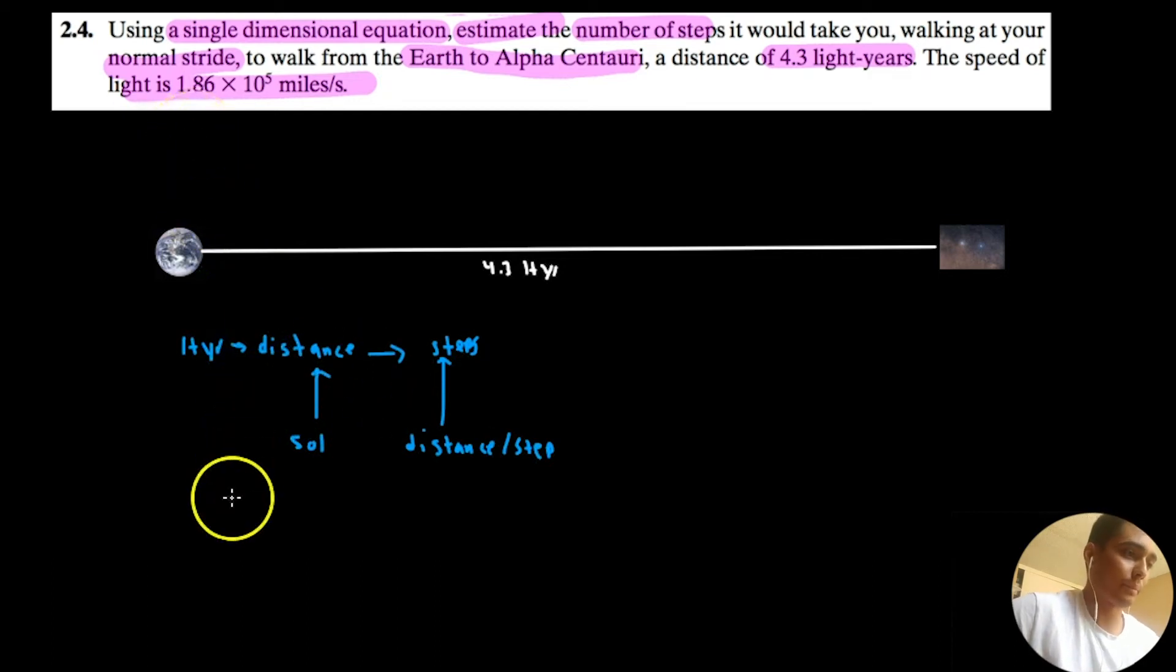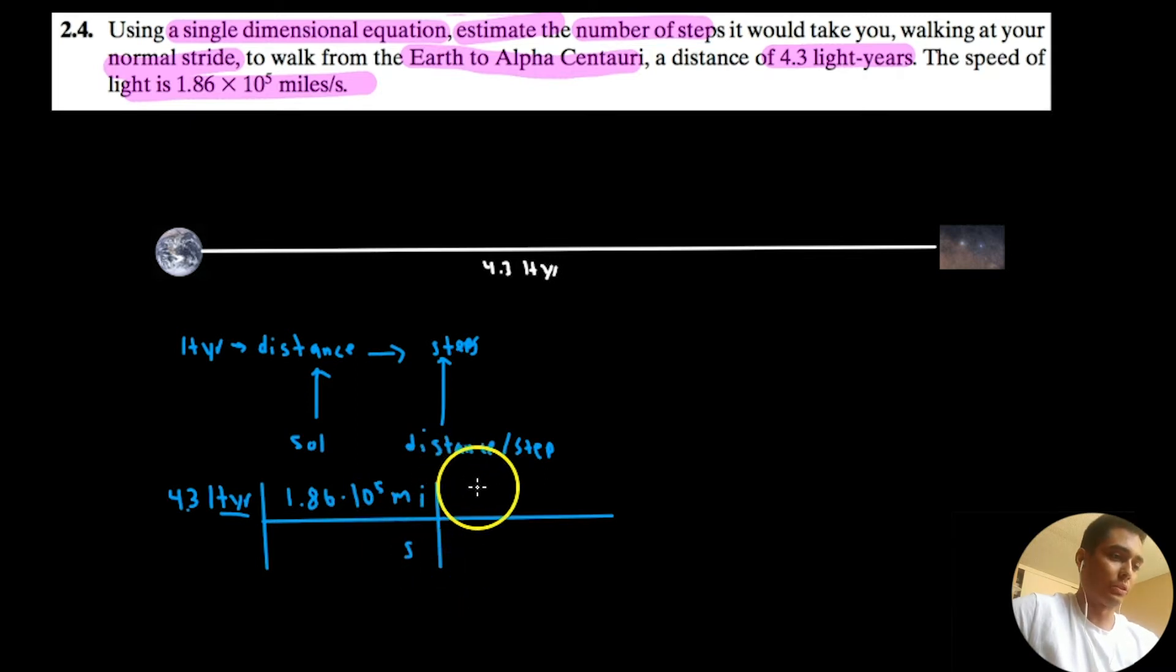So, first let's convert 4.3 light years. Normally, I'd use 3 times 10 to the eighth meters per second, but let's just use what they gave us. So, 4.3 light years. And we want to do a single dimensional equation. So, let's do this all together. 4.3 light years, the speed of light is 1.86 times 10 to the 5 miles per second. So, we got to cancel out years with seconds. So, I'm going to multiply it. 1.86 times 10 to the 5 miles per second. That's extremely fast. So, let's do this again. Last video I said that 3,600 seconds is in one hour. 24 hours per day. 24 hours per day and 365 days per year.